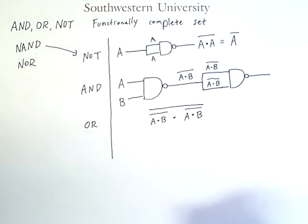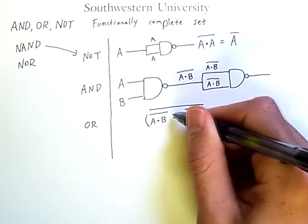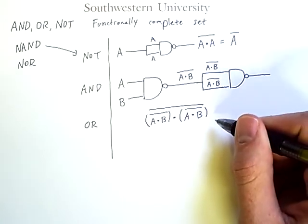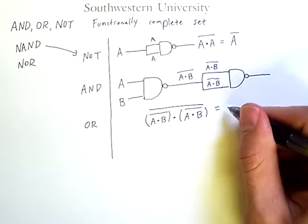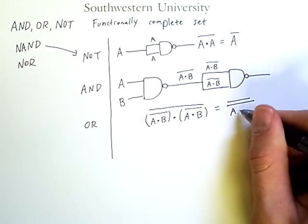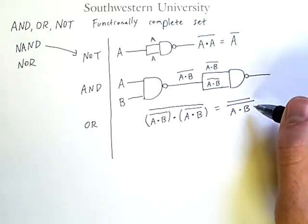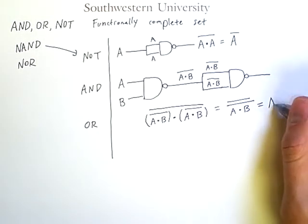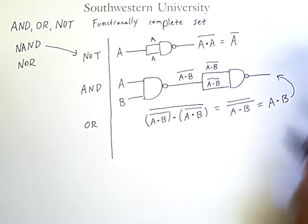Now, there are several ways to simplify this. I could simply notice that this sub-expression and this sub-expression are identical. Therefore, when I AND them together, the result is their negation. But now I have two NOTs. And so, using the double negation law, my final result is simply A and B.